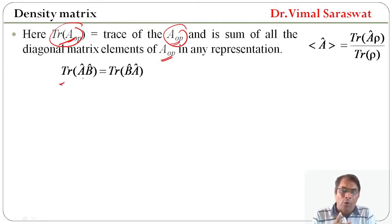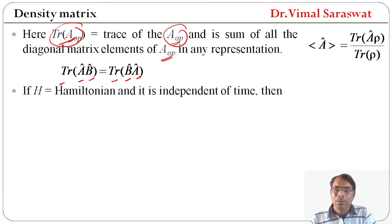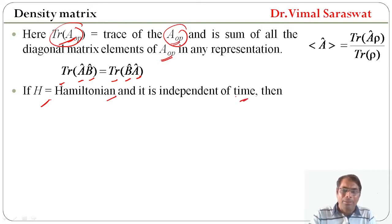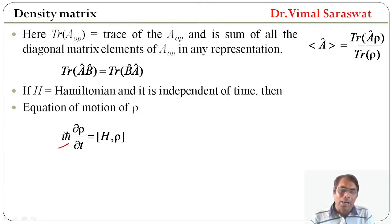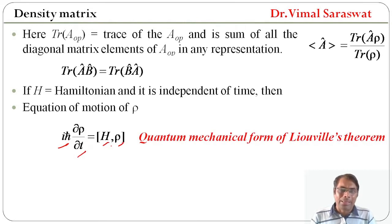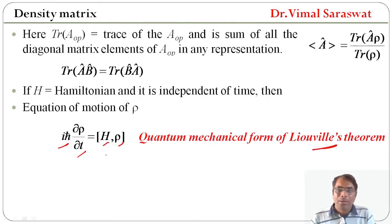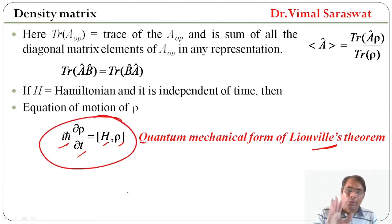Now trace of operator A times operator B equals trace of operator B times operator A. If H is the Hamiltonian and it is independent of time, then the equation of motion of rho is given by i h-bar del rho / del t equals [H, rho]. This is actually the quantum mechanical form of Liouville's theorem.